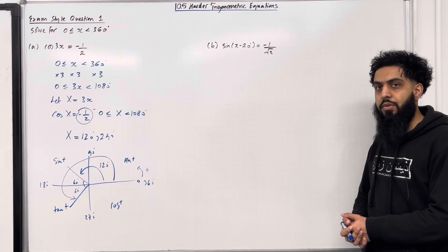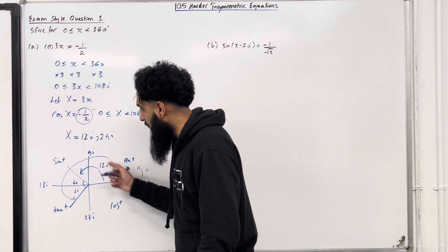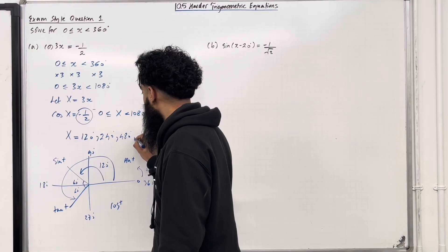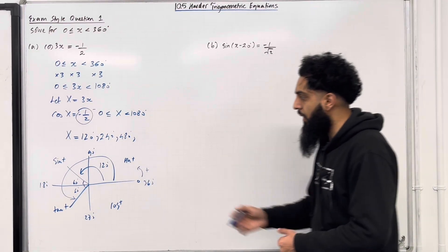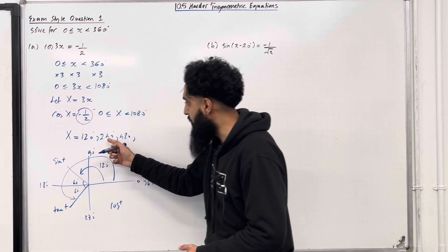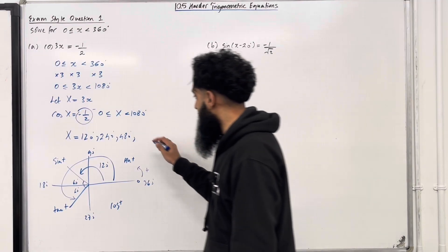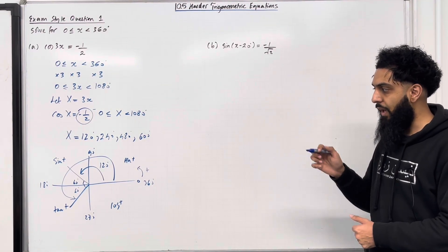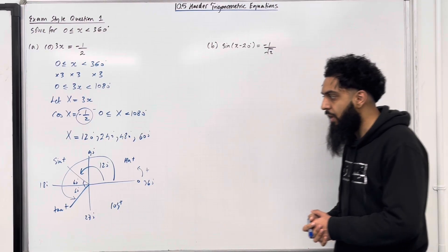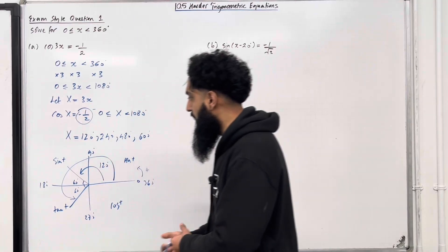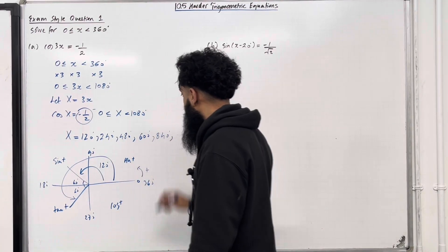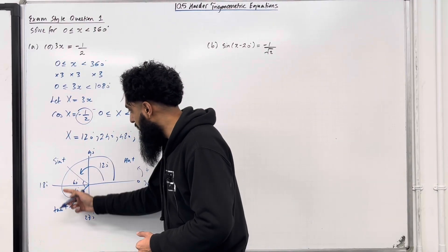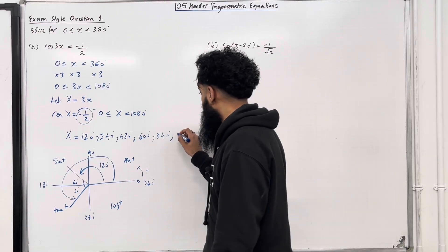We want all solutions from 0 to 1080 degrees. The third solution will be 360 plus 120, which is 480 degrees. The fourth solution will be 360 plus 240, which is 600 degrees. To work out the fifth solution, we go around twice: 720 plus 120 gives 840 degrees. The sixth solution is 720 plus 240, which is 960 degrees.